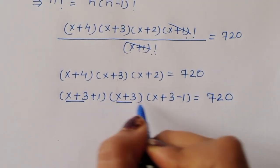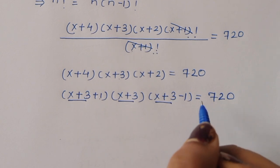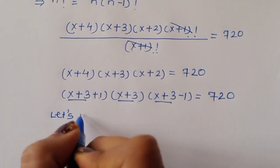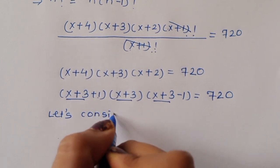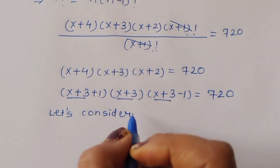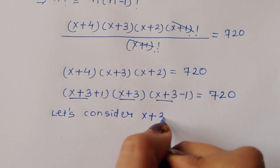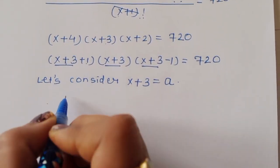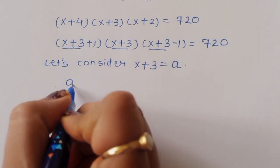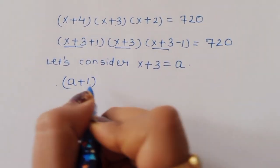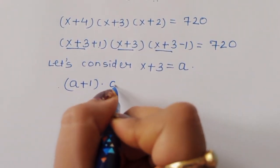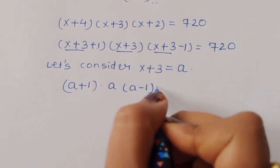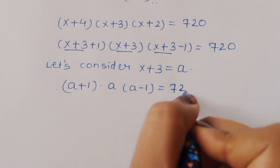We notice that x+3 appears in all three factors. So let's consider x+3 equal to a. This substitution simplifies the expression.